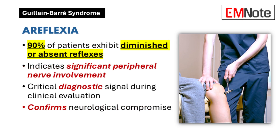Areflexia: Approximately 90% of Guillain-Barré Syndrome patients exhibit diminished or absent deep tendon reflexes. This areflexia serves as a significant clinical indicator of peripheral nerve involvement. During patient evaluation, the absence of reflexes becomes a critical diagnostic signal, helping healthcare providers confirm the syndrome's presence and assess its neurological impact.